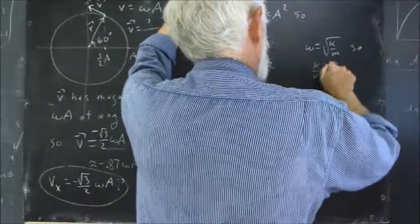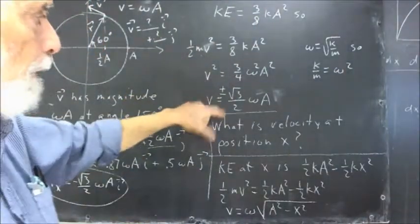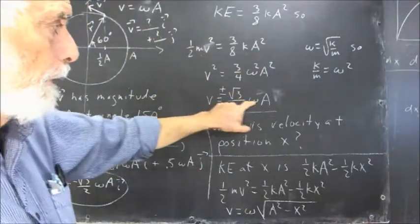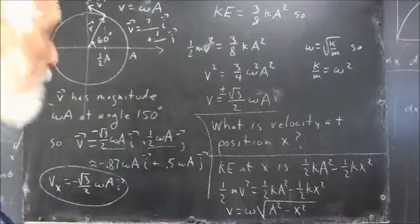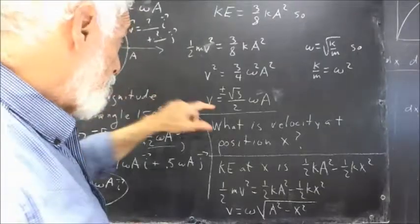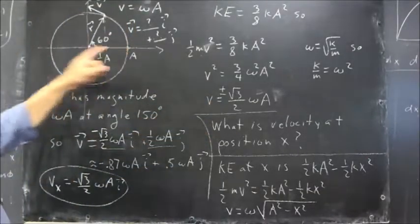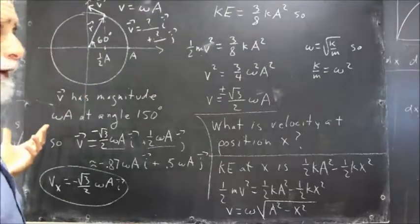So, K over M equals omega squared. And we take the square root, we get plus or minus the square root of 3 over 2 times omega A. Both the plus and the minus would be valid solutions for the velocity, because the oscillator goes back and forth. I said halfway to equilibrium.